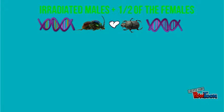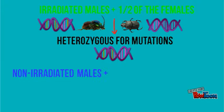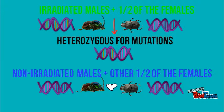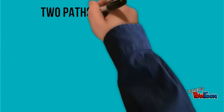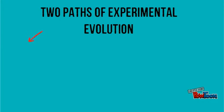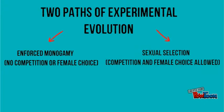Irradiated males were mated with half of the females, producing offspring that were heterozygous for ionization-induced mutations. Non-irradiated males were mated with the remaining group of females to produce control offspring free of induced mutations. Each group was then split in half, and halves were subject to different experimental evolutionary paths: enforced monogamy or sexual selection.